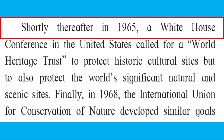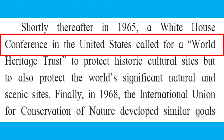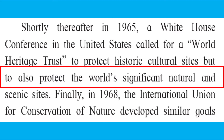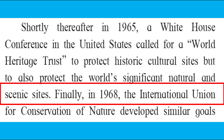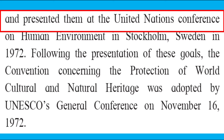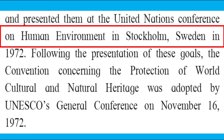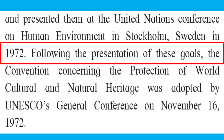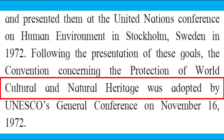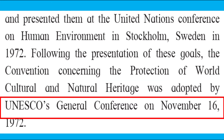Shortly thereafter, in 1965, a White House conference in the United States called for a World Heritage Trust to protect historic cultural sites, but also to protect the world's significant natural and scenic sites. Finally, in 1968, the International Union for Conservation of Nature developed similar goals and presented them at the United Nations Conference on Human Environment in Stockholm, Sweden in 1972. Following the presentation of these goals, the Convention Concerning the Protection of World Cultural and Natural Heritage was adopted by UNESCO's General Conference on November 16, 1972.